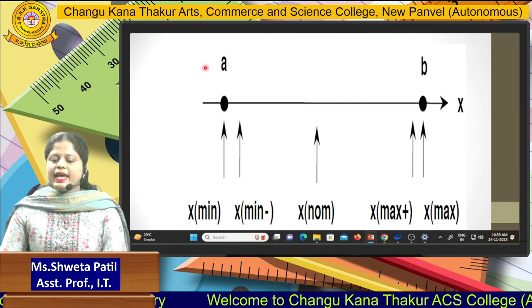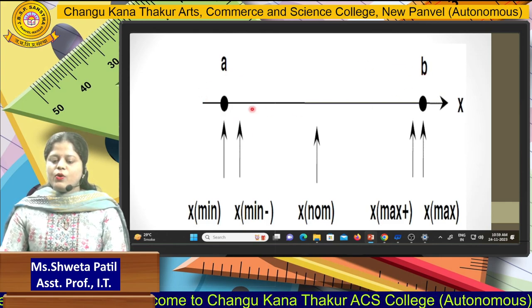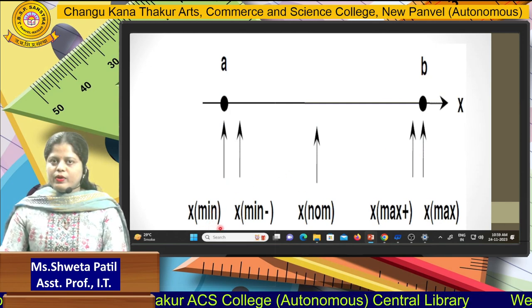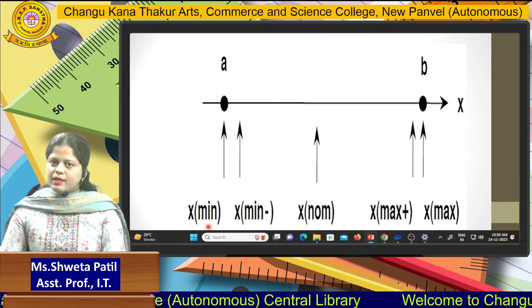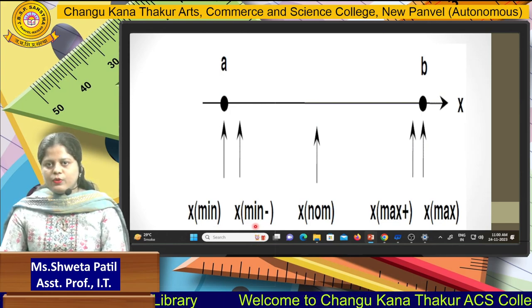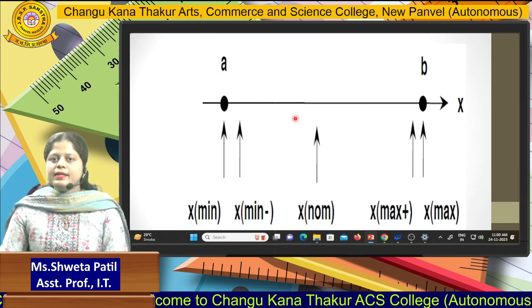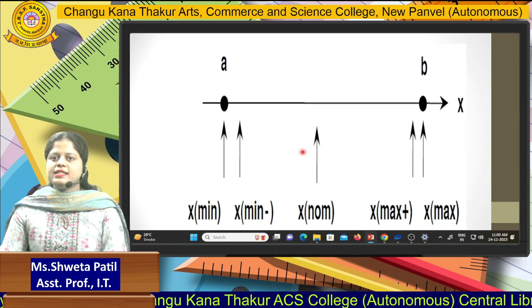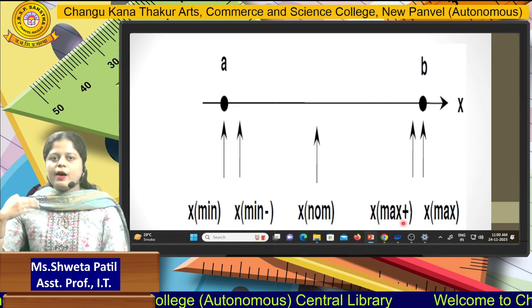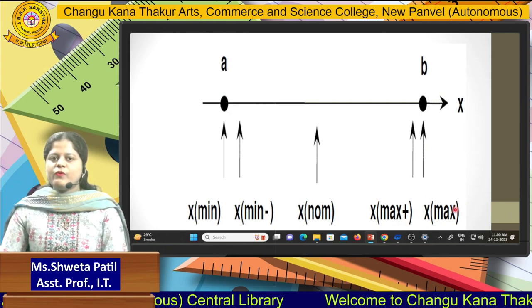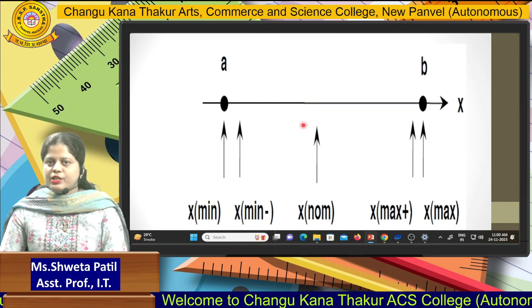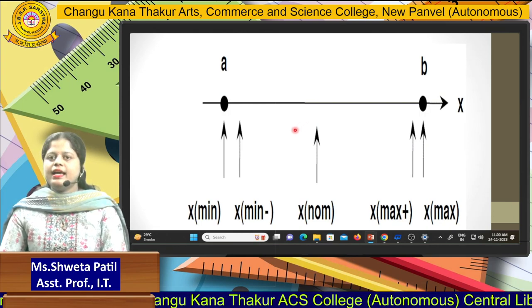As you can see here, A and B are the input. The parameters for the test cases are: first, Minimum Value — x of minimum, meaning you define the minimum value; then x of minimum minus, meaning value just below the minimum value; then x of nominal, which is the middle value — that is the third test case; then x of maximum plus, value just above the maximum value; and x of maximum, the maximum value itself. These five test cases form the basic syntax for test case design in BVA.